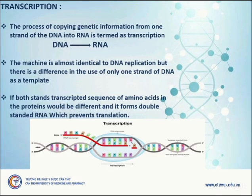Transcription. The process of copying genetic information from one strand of DNA into RNA is termed transcription. The mechanism is almost identical to DNA replication, but there is a difference: only one strand of DNA is used as the template. If both strands were transcribed, the sequence of amino acids in the proteins would be different, and it would form double-stranded RNA which would prevent translation.